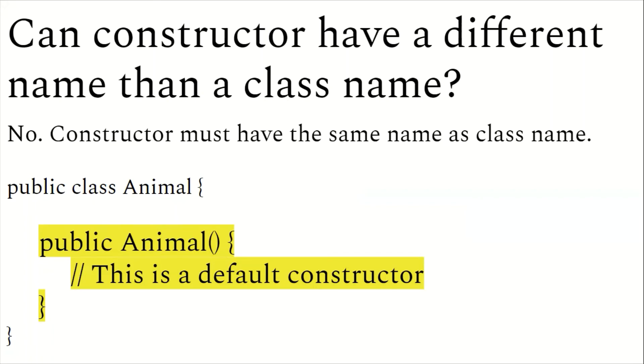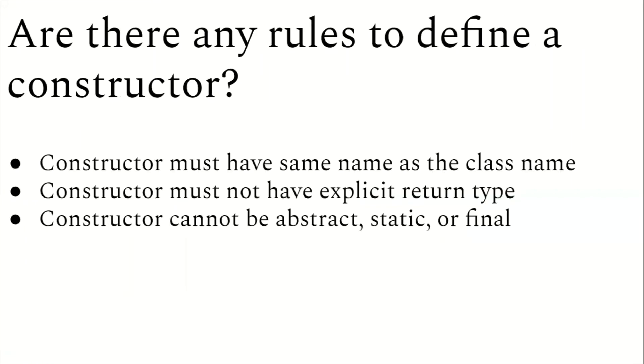Are there any rules to define a constructor? Yes, there are several rules. The first rule is the constructor must have the same name as the class name. The second rule is the constructor does not have any explicit return type—the user does not specify any return type. The third rule is the constructor cannot be abstract, static, or final. These are the three rules of the constructor that we have to follow in Java.